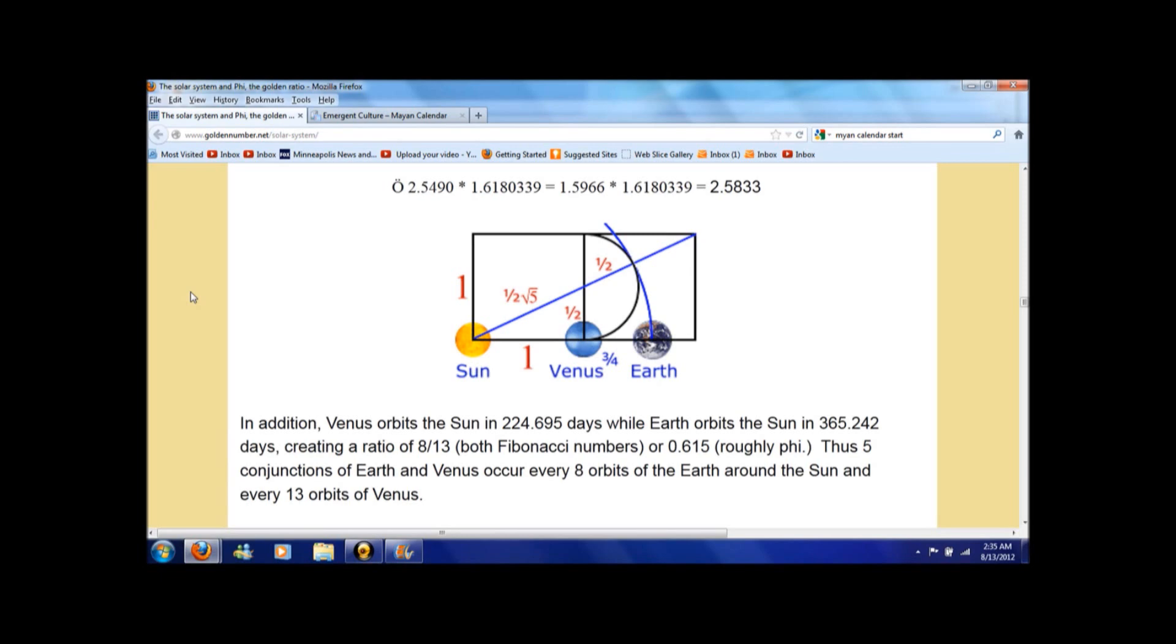And if you want to get even nuttier, when the transit of Venus occurred in June, it was visible until 8:13 p.m. in Mexico.